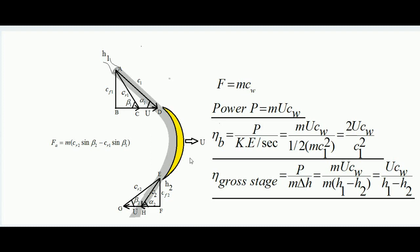Now we learn how much power is developed over the blade. Power = Force × velocity. The force developed in the horizontal direction over the blade is m·cw, and the blade velocity in the horizontal direction is u. So power P = m·u·cw. Blade efficiency is defined as power developed divided by kinetic energy input per second to the blade: η_blade = m·u·cw / (½·m·c1²). Cancelling m, blade efficiency = 2·u·cw / c1².